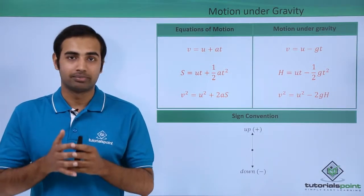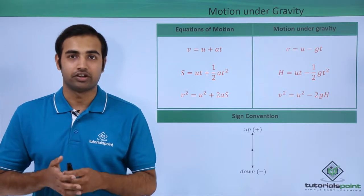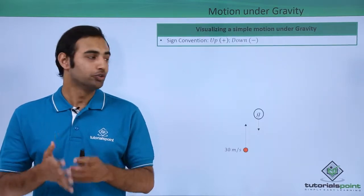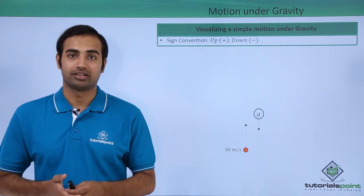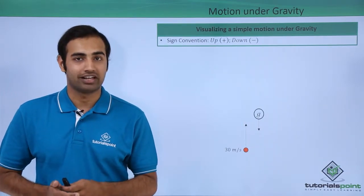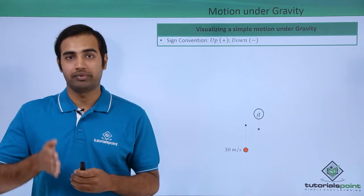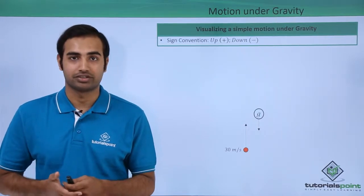Now let's talk about a simple example to get a physical feeling of motion under gravity. So over here we have a ball projected upwards with a speed 30 meters per second, only under the influence of gravitational acceleration whose typical value is 9.8 meters per second square or 10 meters per second square.